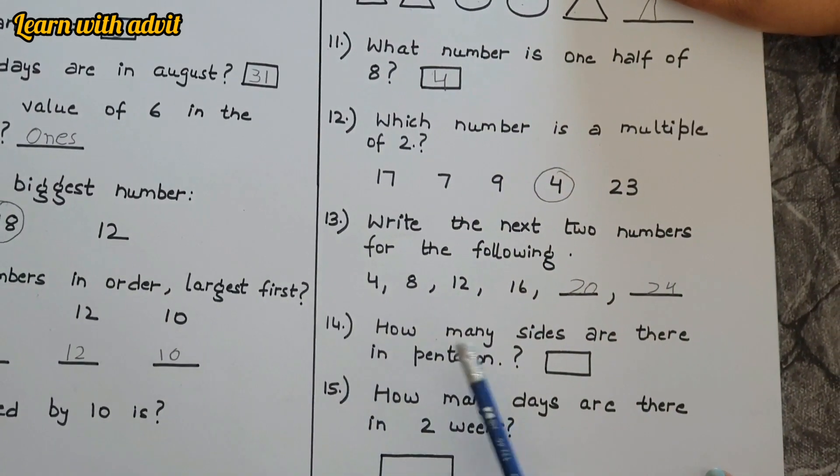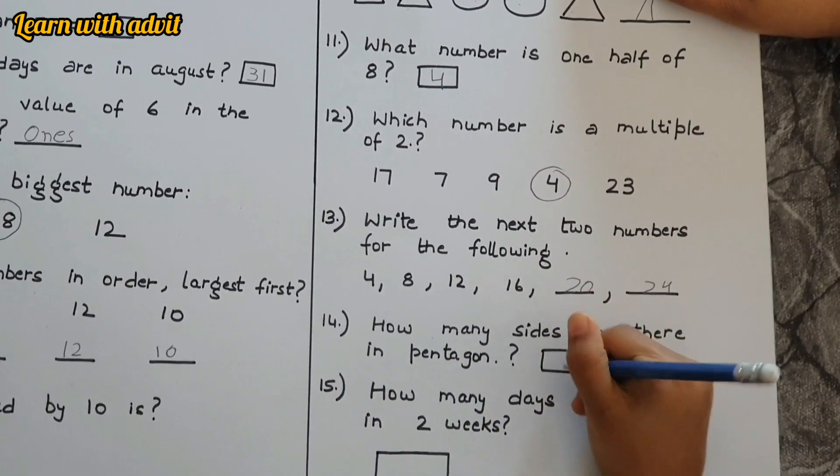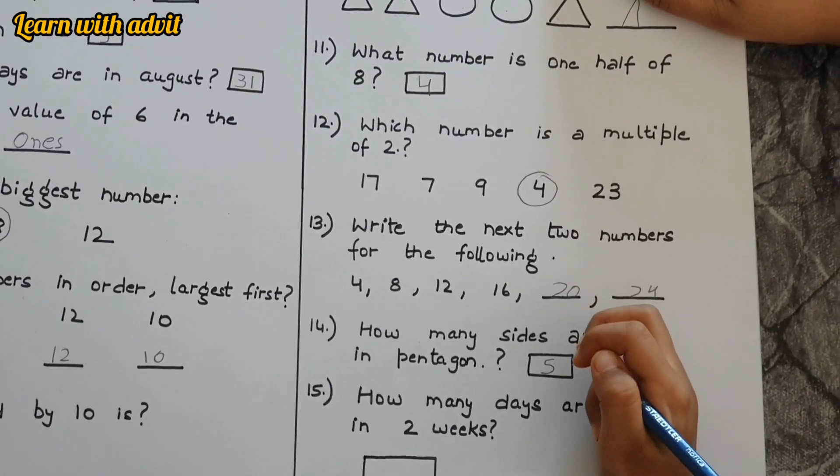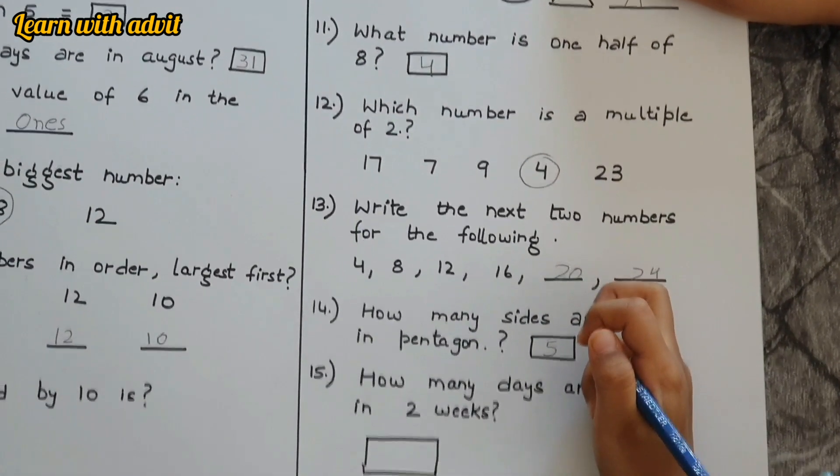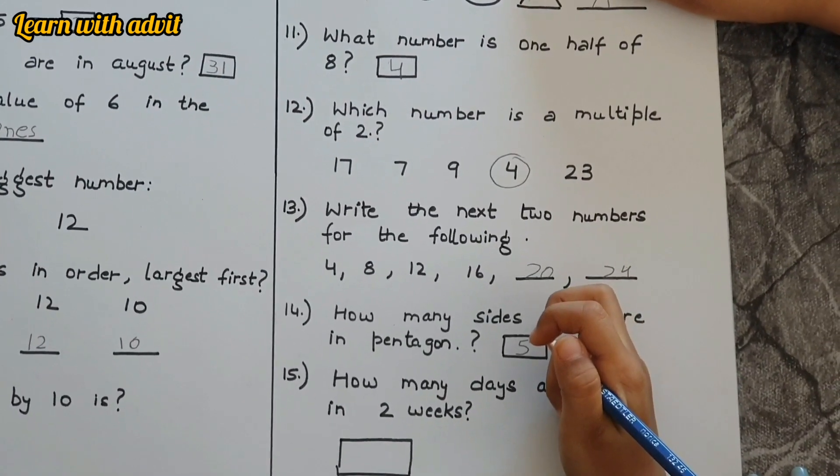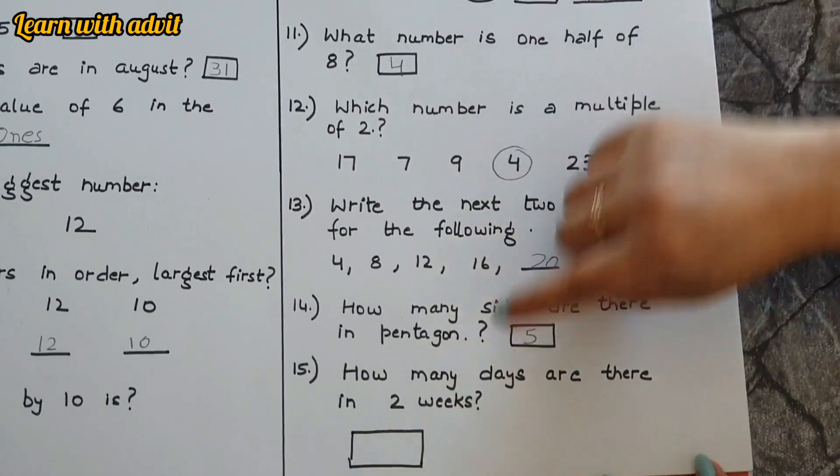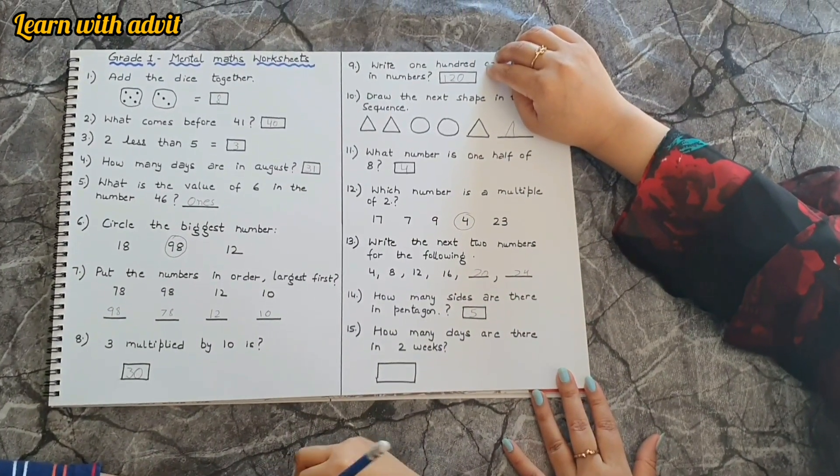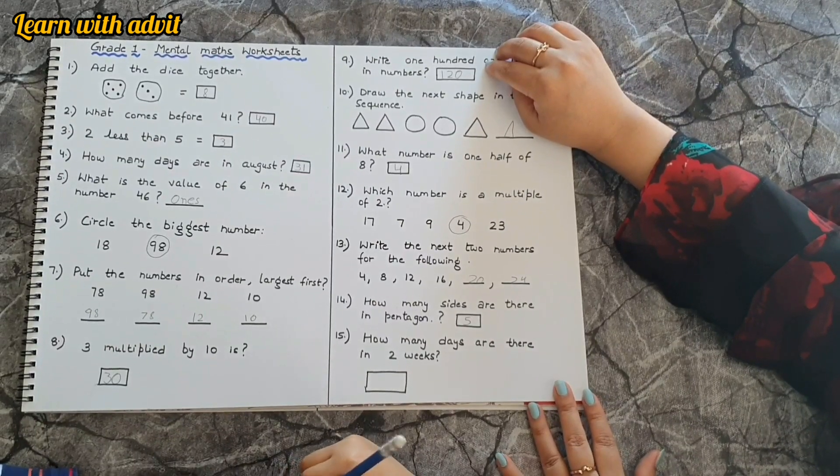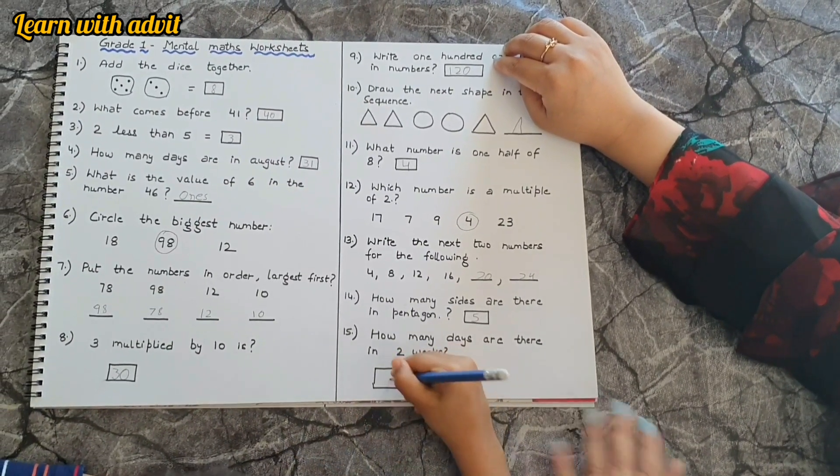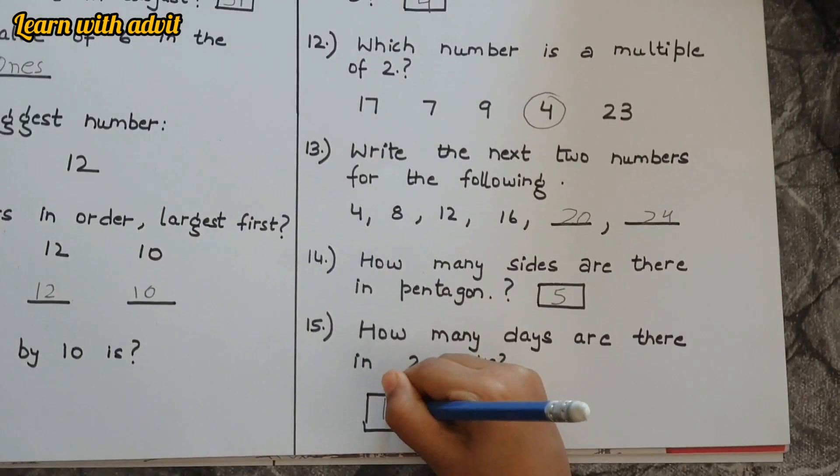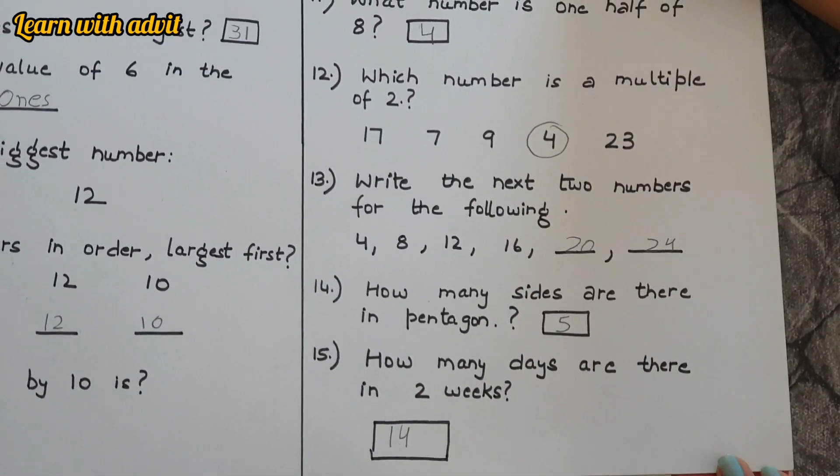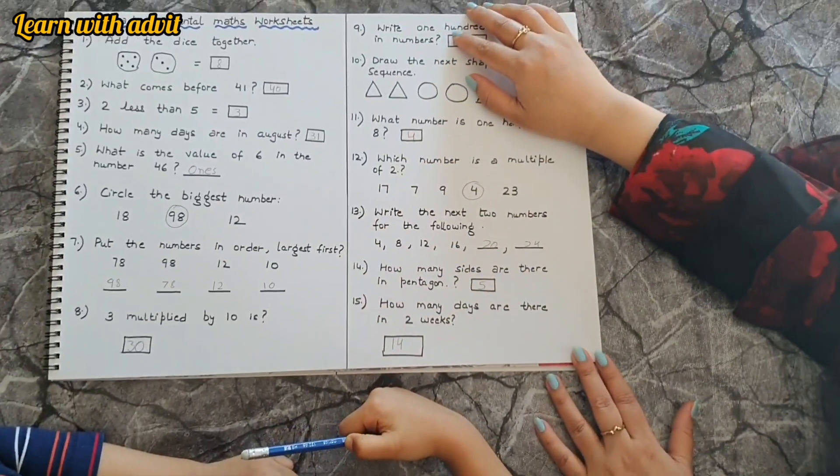How many sides are there in a pentagon? Five. Can you tell me how many sides are there in a heptagon? Seven. And in a decagon? Ten, very good. How many days are there in two weeks? 14, because seven plus seven is 14. Seven days are in a week, so seven times two is 14. So 14 days are in two weeks. Very good. You enjoyed this worksheet?